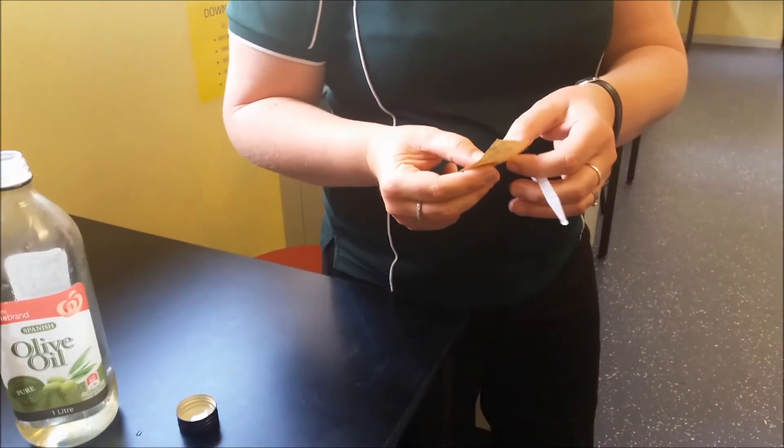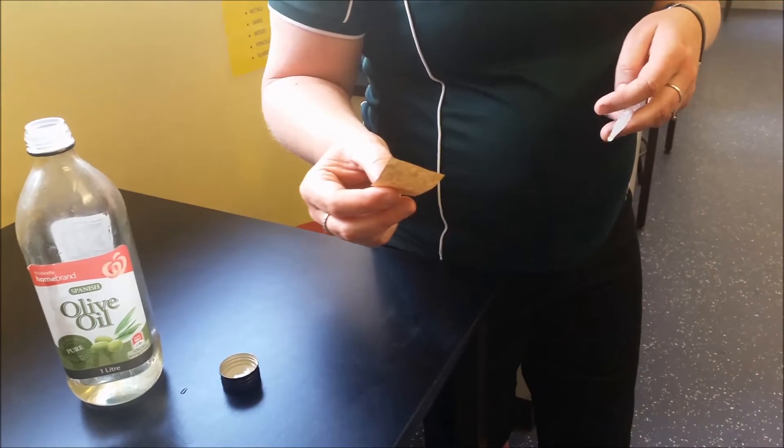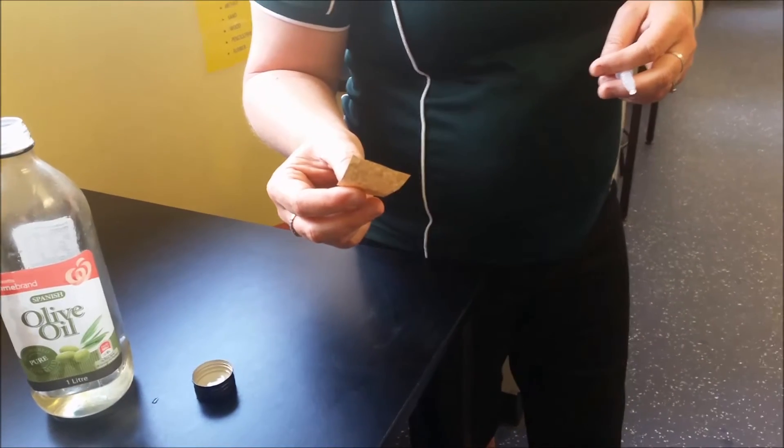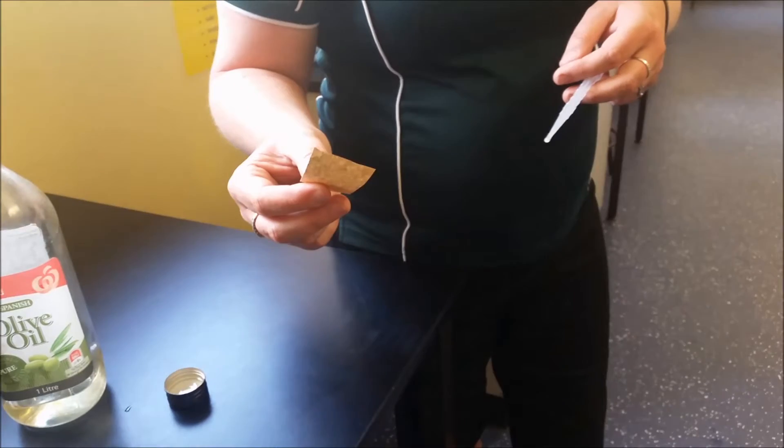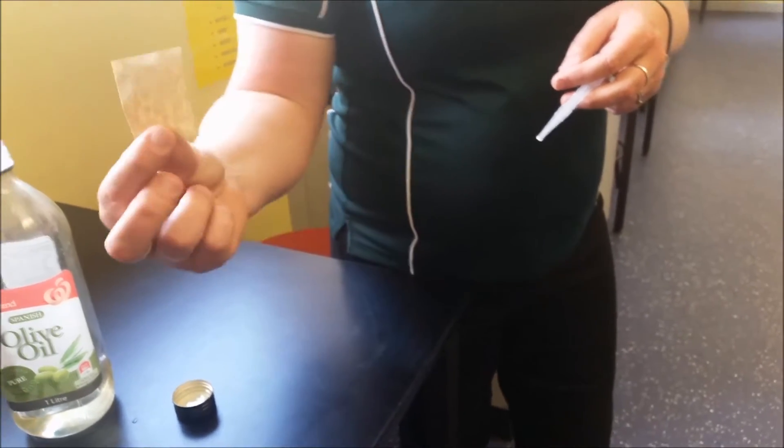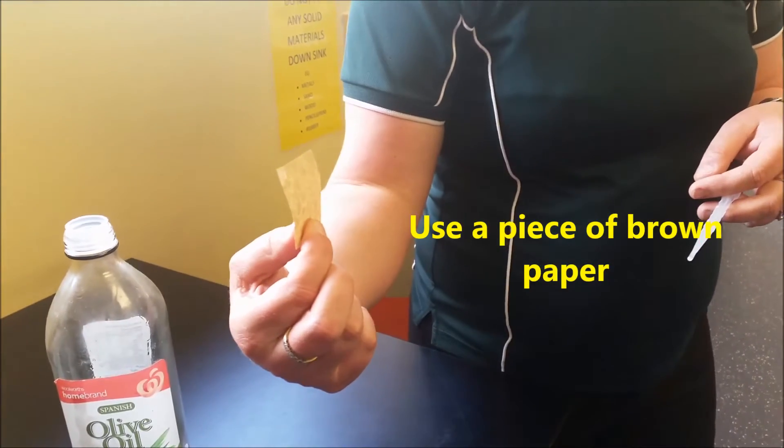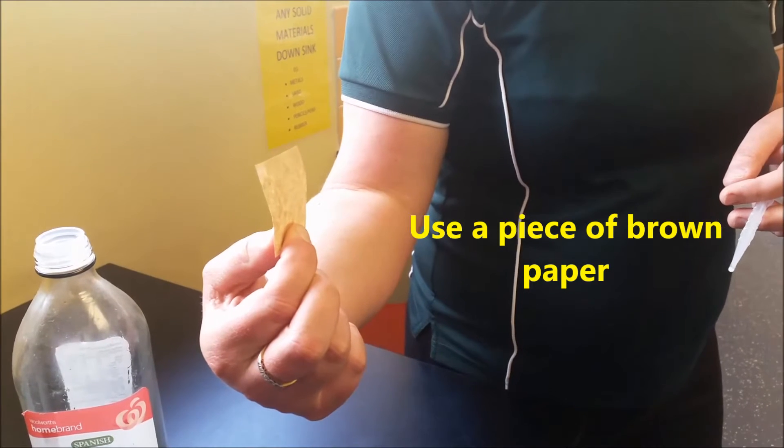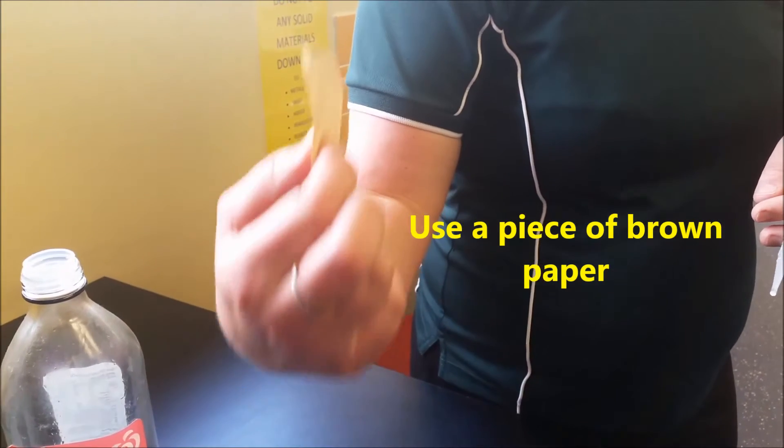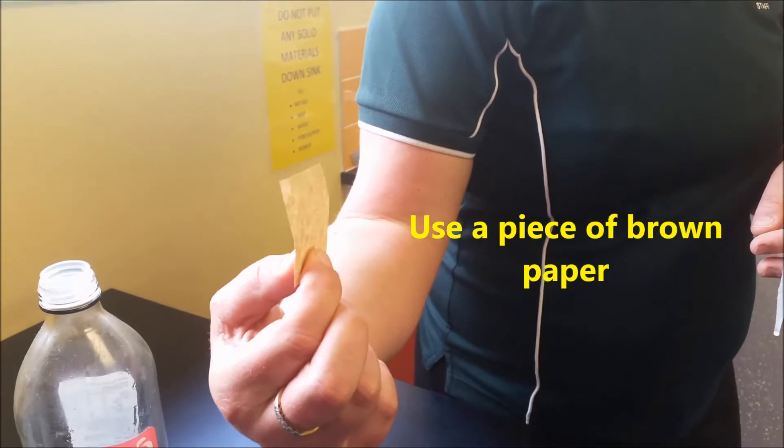The test for fats is quite simple. We talked before on a previous food test about the reagent that you use. The thing that you will use for the fat test is a piece of brown paper. So in a test, if you were asked what do you use to test for fats, that's all you have to say: brown paper.